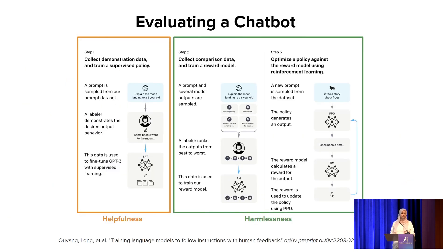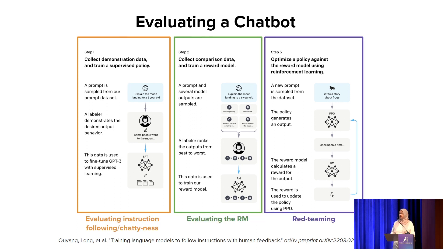Looking at the InstructGPT paper figure from OpenAI, this shows the steps of taking a base model and fine-tuning it to make it a chatbot. Step three — supervised fine-tuning — maps to optimizing the model for helpfulness, and step four — RLHF — maps to optimizing the model to be harmless. To evaluate a chatbot, you need to evaluate instruction following capability, the reward model (essentially a classifier), and also conduct red teaming — adversarially prompting the model to make sure it is aligned with the values you care about.